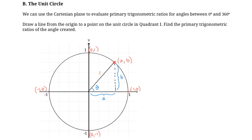Now let's find the primary trig ratios for angle theta. The cosine of any angle is the adjacent side over the hypotenuse. Our adjacent side is A and our hypotenuse is 1, so cos(θ) = A/1 = A. For sine of theta, the sine of any angle is the opposite side over the hypotenuse. The opposite side is B and the hypotenuse is 1, so sin(θ) = B/1 = B.